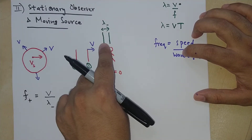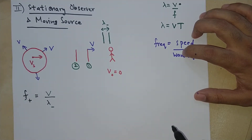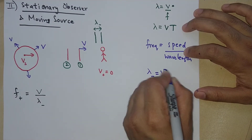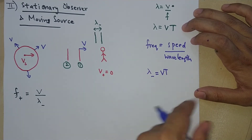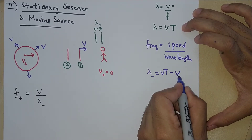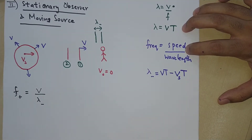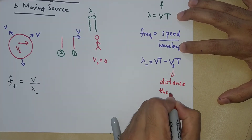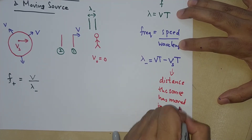When the second crest approaches the observer, the source has moved closer. So let's write an equation for the smaller wavelength: lambda-minus equals v times T — where vT is just the usual wavelength — minus the distance that the source has moved in one time period, which is vs times T.